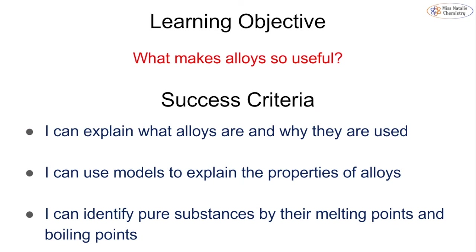We should have now answered the question: what makes alloys so useful? Hopefully you can now explain what alloys are and why they are used, draw a model to explain the properties of alloys by looking at how particles are arranged, and identify pure or impure substances by their melting or boiling points. If there's anything you're not sure about, please leave a comment below or ask your teacher, and we hope to see you back soon.